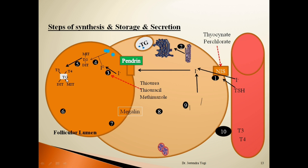This coupling reaction lasts from a few minutes to an hour. Two molecules of DIT couple to form T4, and one molecule of MIT coupled with DIT forms T3. One molecule of thyroglobulin contains approximately 6 molecules of DIT, 7 molecules of MIT, 2 molecules of thyroxine or T4, and 0.2 molecules of T3. So in one molecule of thyroglobulin, the ratio of T4 to T3 is 10:1.